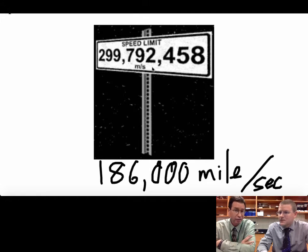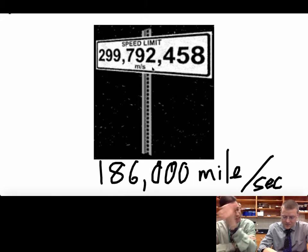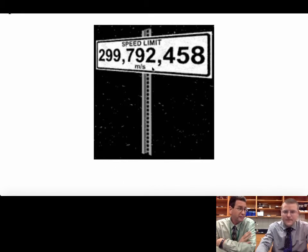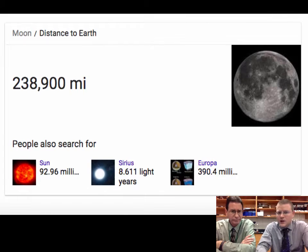Right. But another thing that we need, besides the speed of light and a formula to use it in, we also need the distance to the moon. So if we could find the distance to the moon, then we could do a quick division problem. The moon is 238,900 miles away. That is correct. So almost 239,000 miles away.